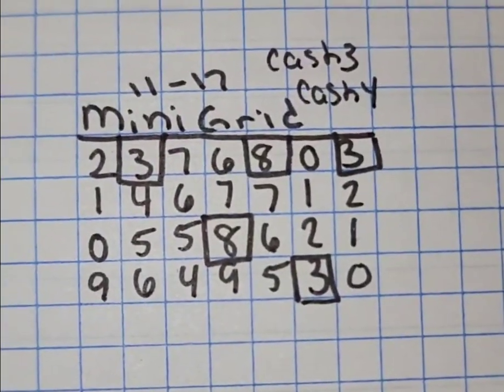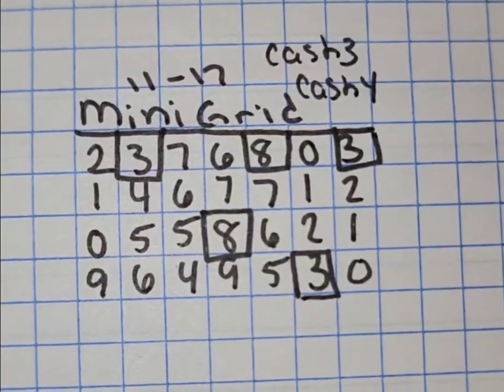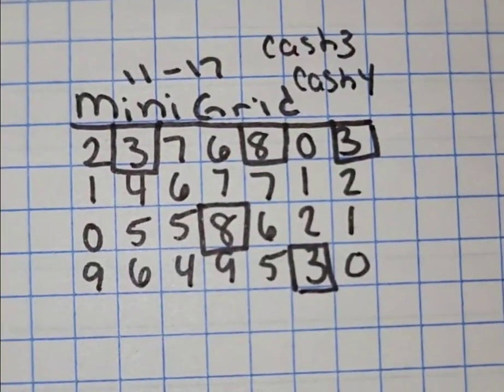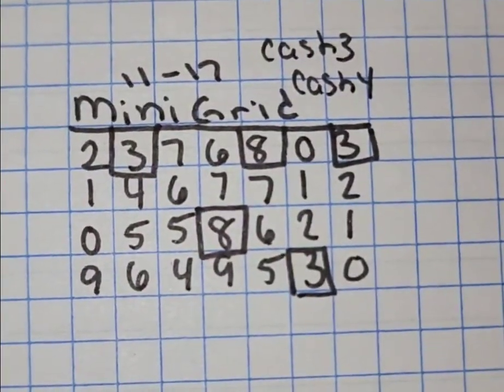Hey y'all, it's Magnolia Money and this is the November 17th mini grid. This is good for all draws, all states, all day. For the entire day, you'll see that the 8s and 3s are boxed off. That is because 8 is your date sum and 3 is the mirror to an 8.